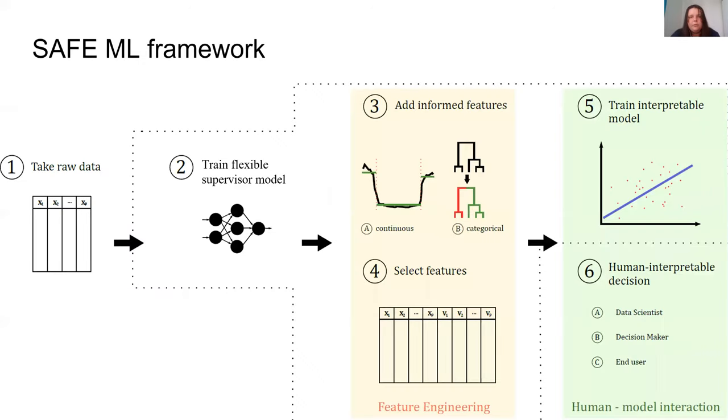Now I would like to present a framework for supervised assisted feature extraction for machine learning models. It's called SafeML and it uses elastic complex algorithm as a supervisor model to create an interpretable yet still accurate glassbox model. The main idea is to train a new interpretable model on newly engineered features extracted from the supervisor model.